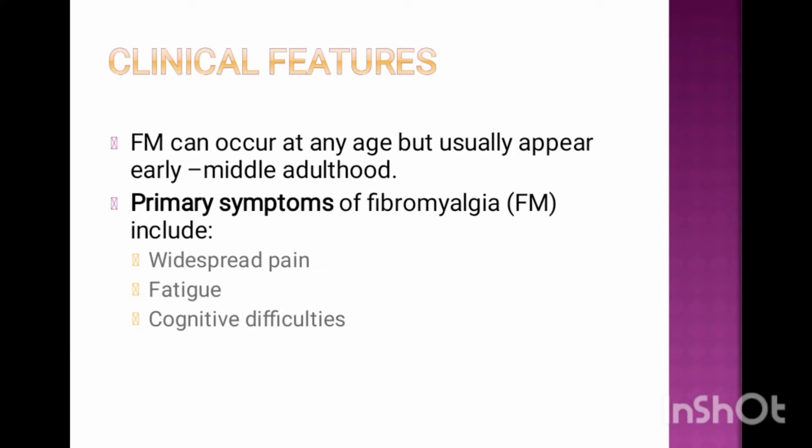Clinical Features: Fibromyalgia can occur at any age but usually appears in early to middle adulthood. The primary symptoms involve widespread pain; to be considered widespread, the pain must occur on both sides of your body and above and below your waist.